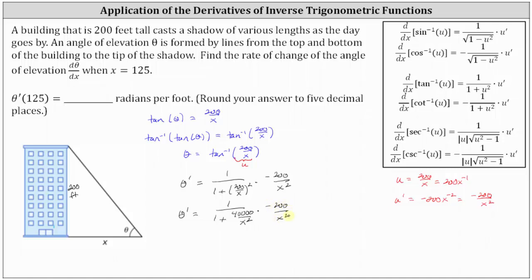Let's go ahead and simplify. We have theta prime equal to 1 divided by the quantity 1 plus 40,000 divided by x squared, all times negative 200 divided by x squared. The numerator is 1 times negative 200, which is negative 200. In the denominator, distributing x squared gives us x squared times 1 is x squared, plus 40,000 divided by x squared times x squared, which is just 40,000.